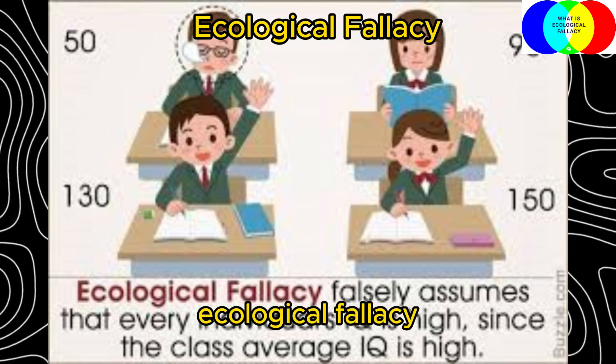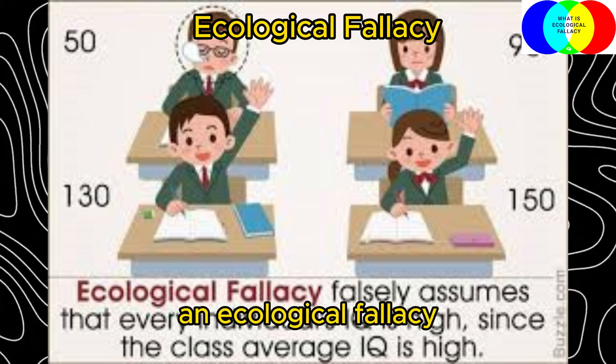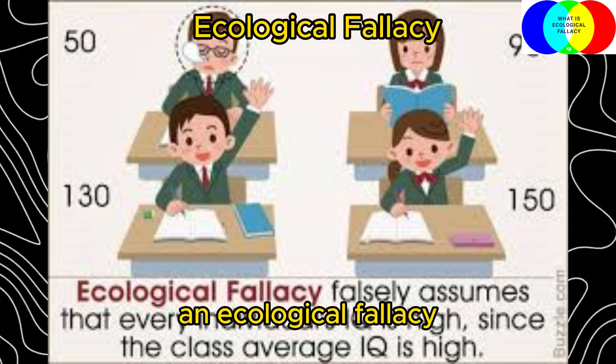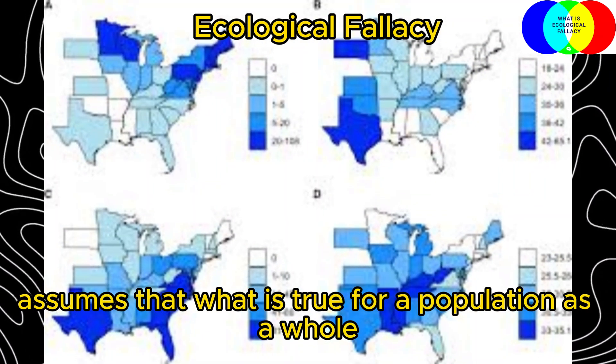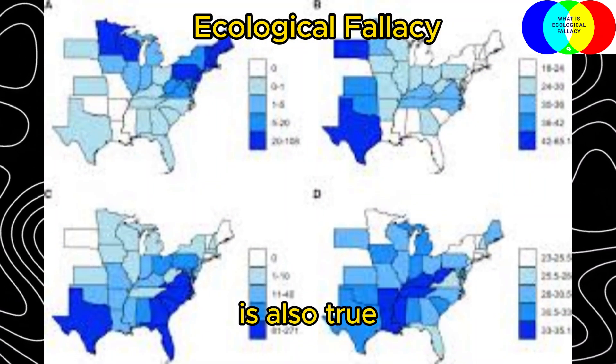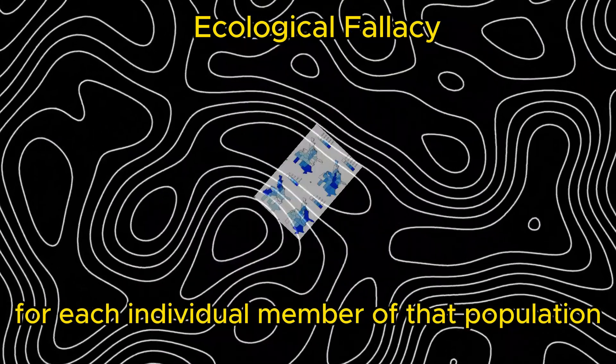Ecological fallacy. An ecological fallacy assumes that what is true for a population as a whole is also true for each individual member of that population.